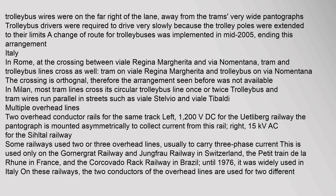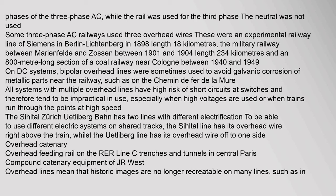Some railways use two overhead conductor rails for the same track, such as 1,200 volts DC for the Uetliberg railway with the pantograph mounted asymmetrically to collect current. Some three-phase AC railways used three overhead wires, including an experimental railway line of Siemens in Berlin-Lichtenberg in 1898, the military railway between Marienfeld and Zossen between 1901 and 1904, and an 800-meter section of a coal railway near Cologne. Between 1940 and 1949, bi-polar overhead lines were sometimes used on DC systems to avoid galvanic corrosion. All systems with multiple overhead lines have a high risk of short circuits at switches and tend to be impractical.